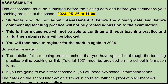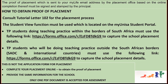For school information, the details of the teaching practice school that you have applied to through the teaching practice online booking must be provided on the school information form. These details are in Tutorial Letter 102. If you are going to do teaching practice at two different schools, you will need two school information forms. The dates on the school information forms must correlate with the proof of placement received from the placement office, which is sent to your MyLife email address.